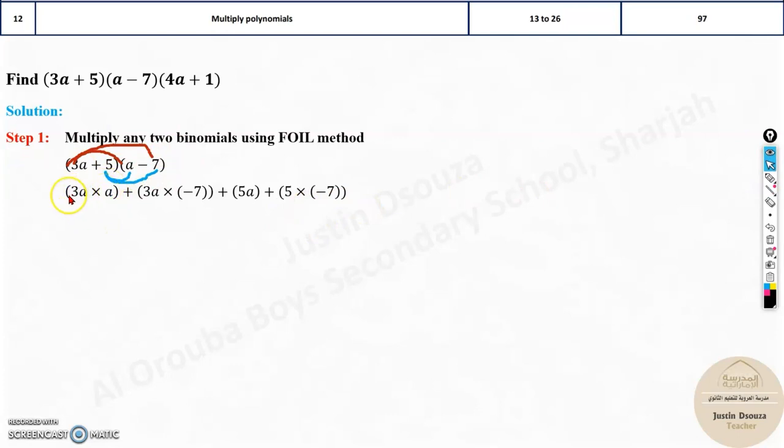Now you need to just simplify. A times A is A squared. This becomes 3A squared. 7 times 3 is 21. Negative sign prevails. A will remain 5A minus 7 times 5 is 35. Then now you can simplify this term, the A and A. So it will be negative 21 plus 5. That is negative 16. So this is the answer. But this is the answer for these two terms. Don't forget the other term.